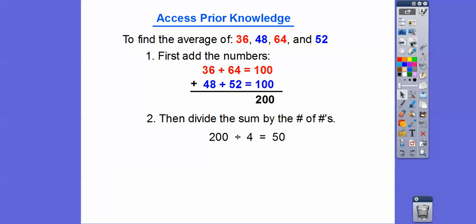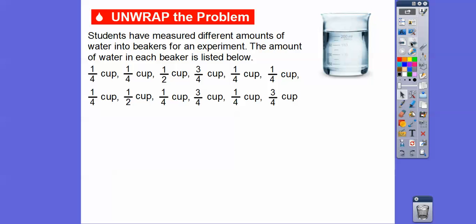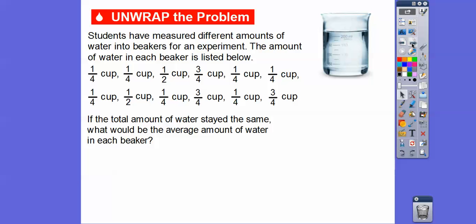We're going to be doing that with fractions here. Students have measured different amounts of water in beakers for an experiment. The amount of water in each beaker is listed below — we see a fourth of a cup, a fourth of a cup, a half, a three-fourths, and some more. What we're going to do is: if the total amount of water stays the same, what would the average amount of water in each beaker be? We'll add up all these numbers and divide by the number of numbers, and it looks like there are 12 numbers.